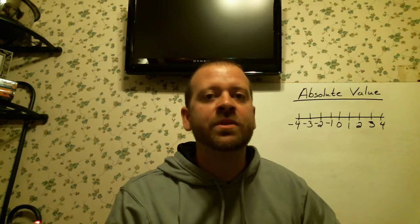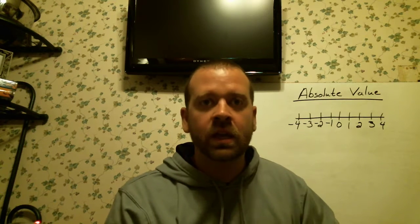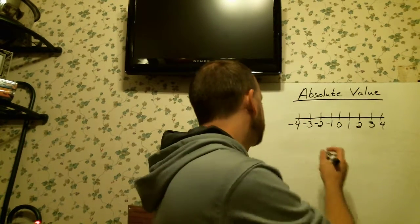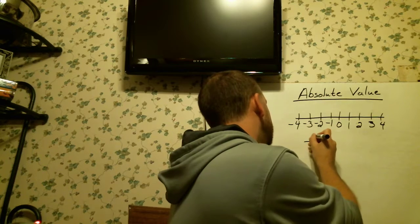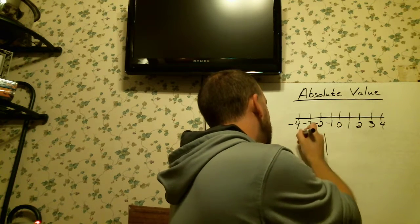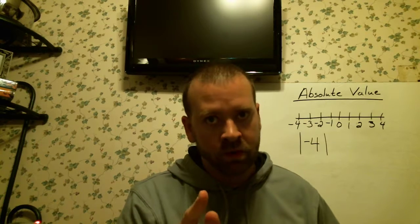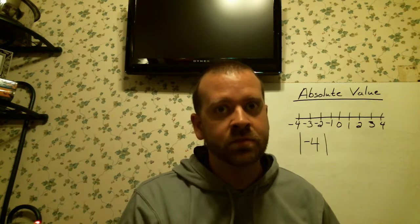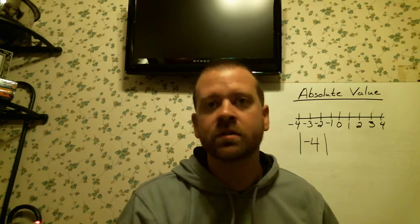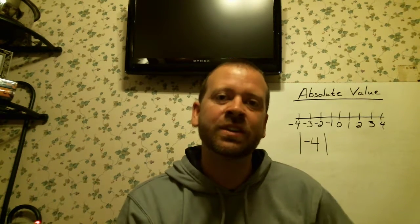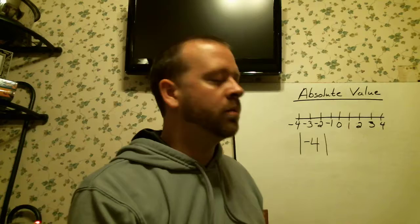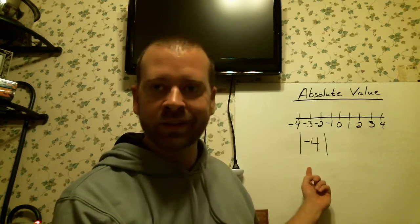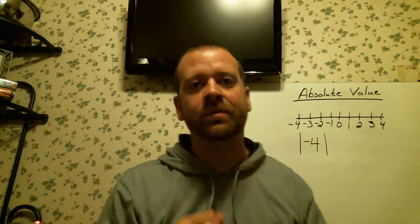Most of the time when you see an absolute value problem, this is how it's going to look. You're going to have a rational number. Remember, rational numbers are integers, positive or negative, decimals, positive or negative, fractions, positive or negative. So you'll see an integer and it'll be surrounded by lines. One line before, one line after.